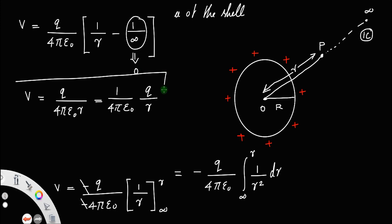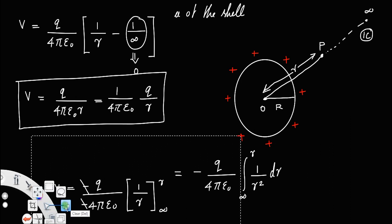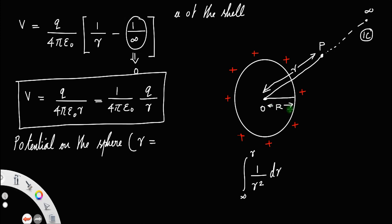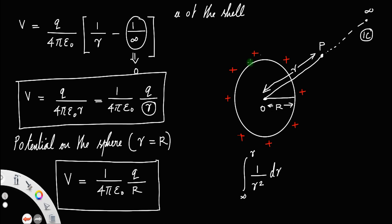This is the expression for the potential at a point P outside the sphere. Now, what about the electric potential on the sphere itself — that is, the potential on the sphere? You only have to take the special case where r is equal to the radius R of the sphere. Putting r equal to capital R, the potential on the surface V is equal to 1 by 4π epsilon-0 times q divided by R. This is the expression for potential due to a spherical shell on its surface.